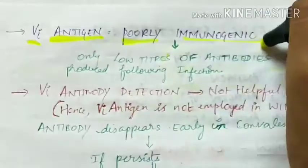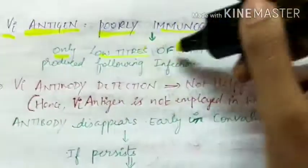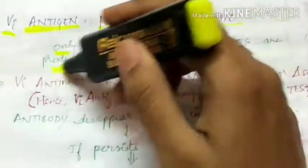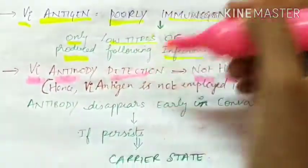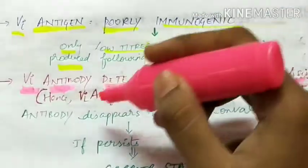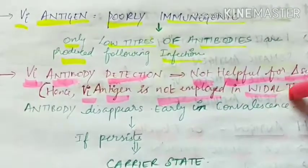The Vi antigen, that is the surface antigen, is poorly immunogenic, so there are only low titers of antibodies produced following infection. The Vi antibody detection is not helpful for diagnosis. Hence Vi antigen is not employed in Widal test.